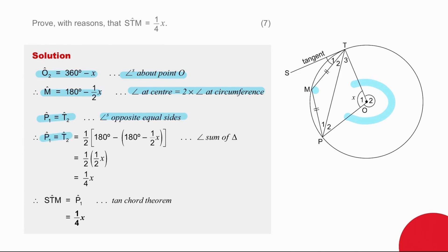We calculate them at the same time because they are each a half of the difference between 180 degrees and the angle that we have. And all of that is based on the angle sum of the triangle. That gives us an end result of a quarter x. So using the tan chord theorem, we link angle STM to angle P1, justify and conclude.